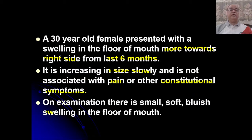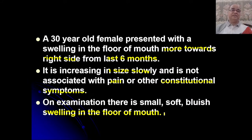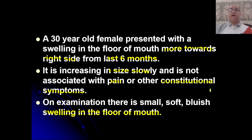On examination there is a small, soft, bluish swelling in the floor of the mouth. From our discussion in Part One, we know that a bluish tinge or frog belly appearance, soft cystic swelling away from the midline at the floor of the mouth, slowly progressing in size — this is nothing else but ranula.